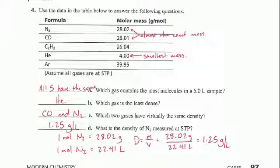B asks, which gas is the least dense? And if I remind you of your density equation, density is equal to mass divided by volume. Realize that volume isn't changing here. We have 5.0 liters. That part's not changing.